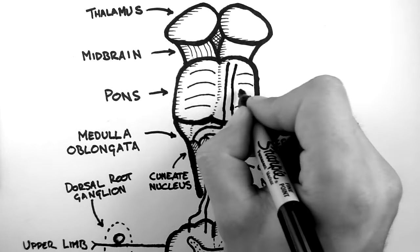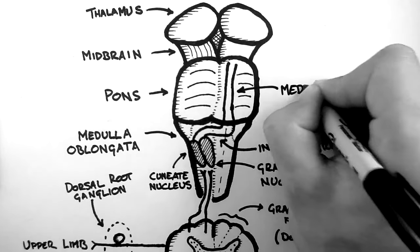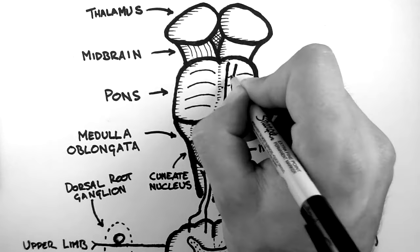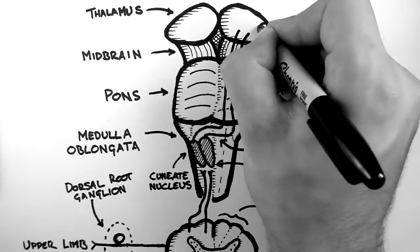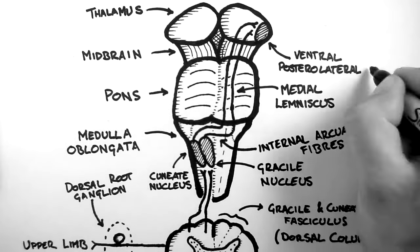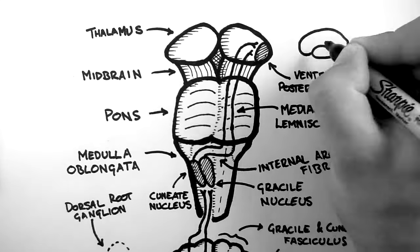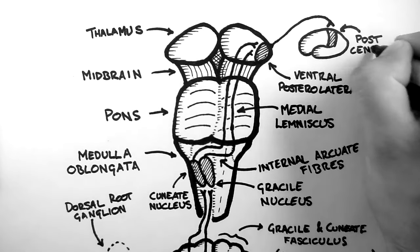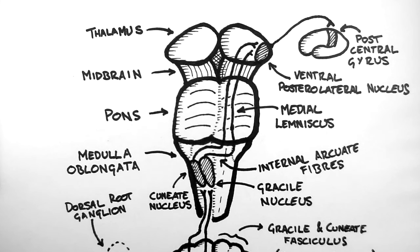Then finally through the rest of the brain stem, these fibers are known as the medial lemniscus. Finally they synapse onto a nucleus in the thalamus known as the ventral posterolateral nucleus, which in turn sends projections to the postcentral gyrus in the cortex. The postcentral gyrus is the primary sensory area of the brain.